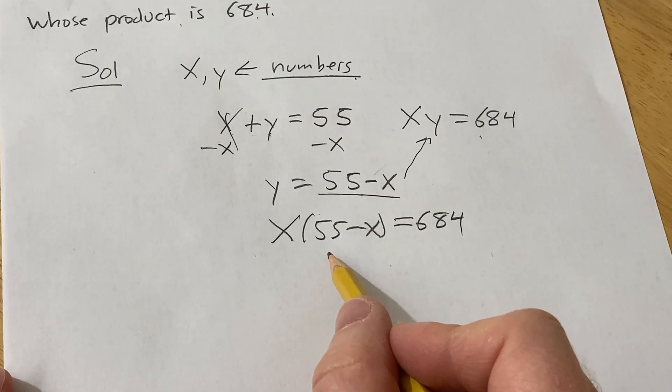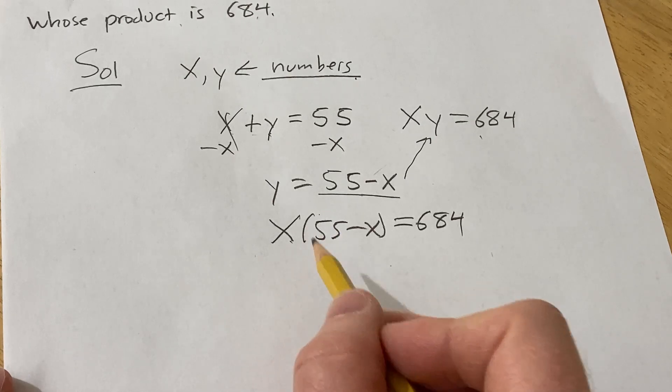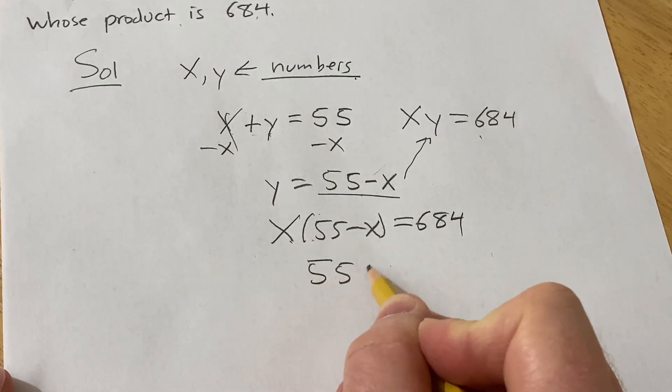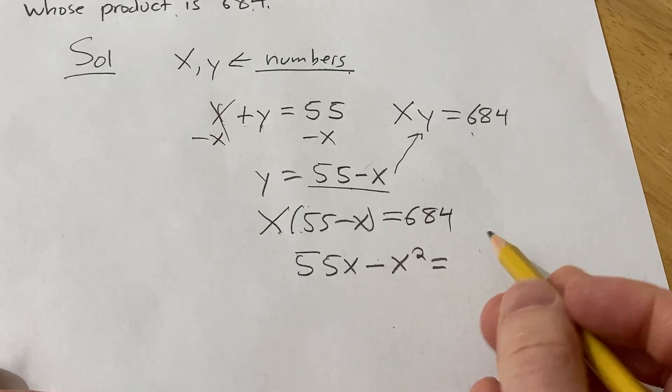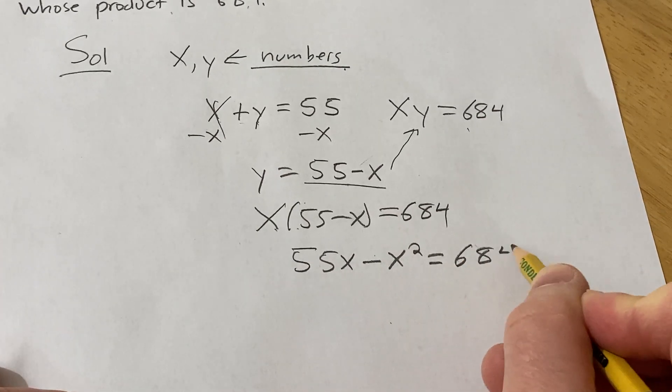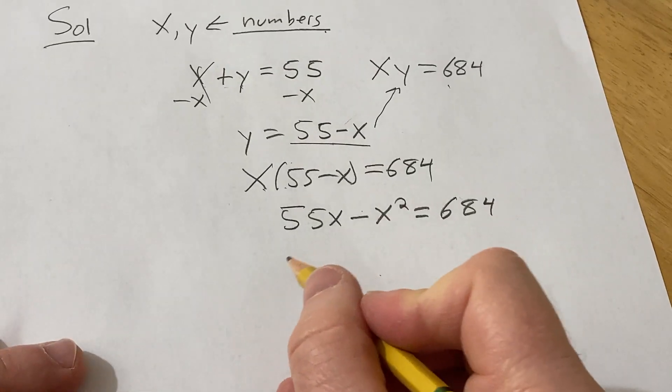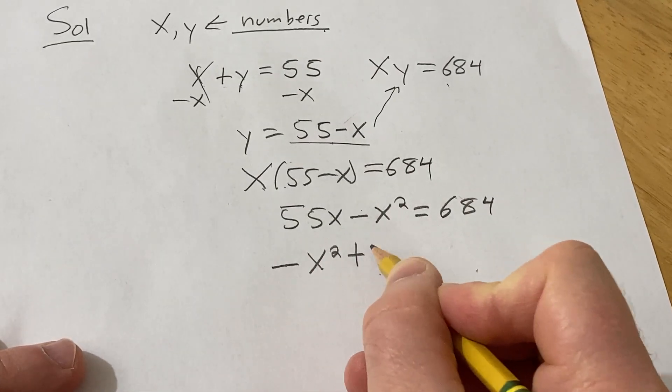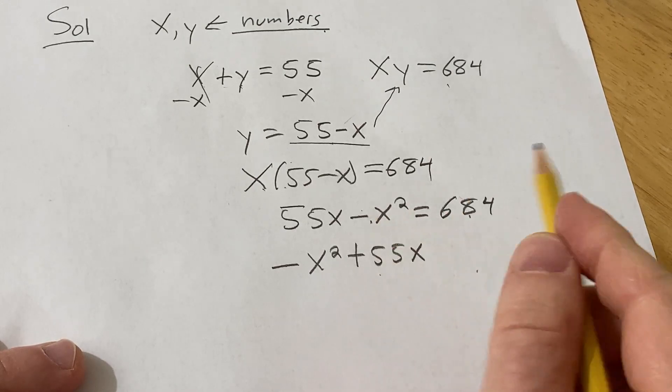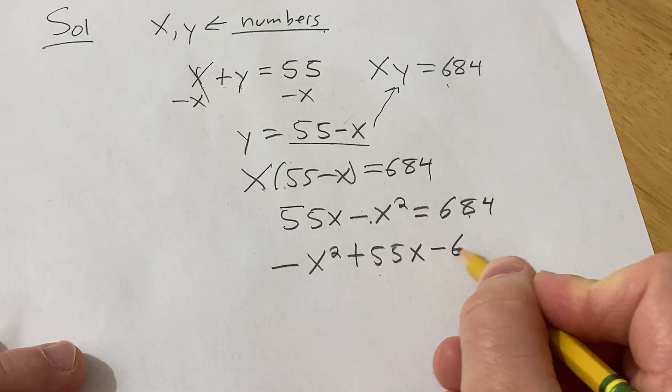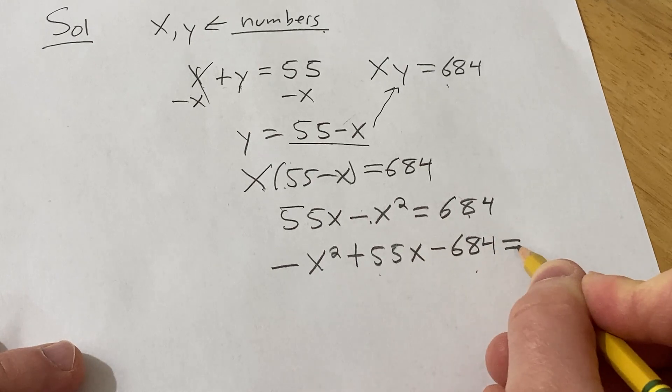Alright, let's keep going. So we can distribute this x. This is 55x minus x squared, and that's equal to 684. So this is negative x squared plus 55x. Now we can subtract this over to this side, that will give us minus 684, and that's equal to zero.